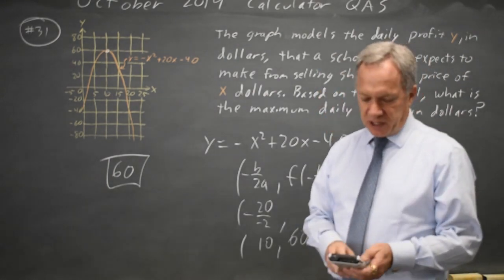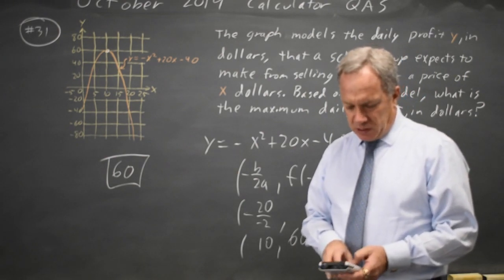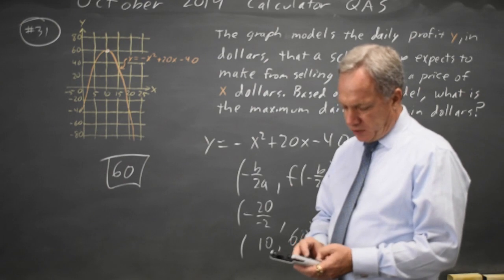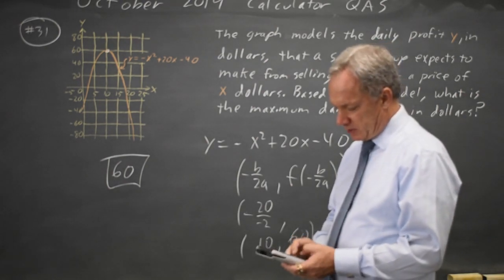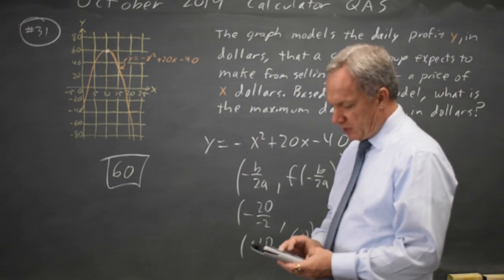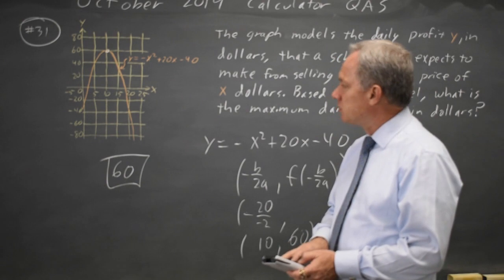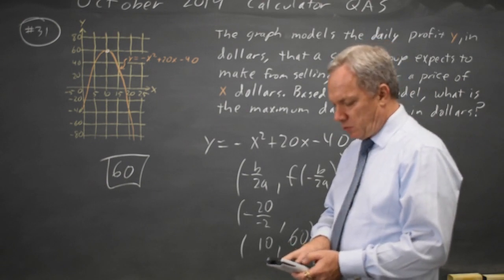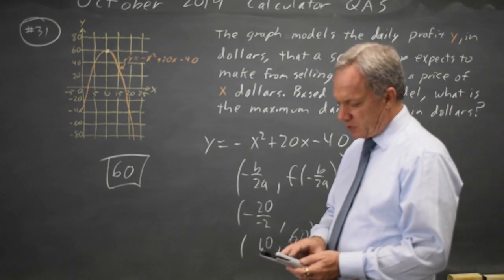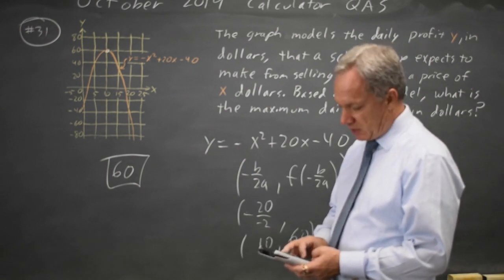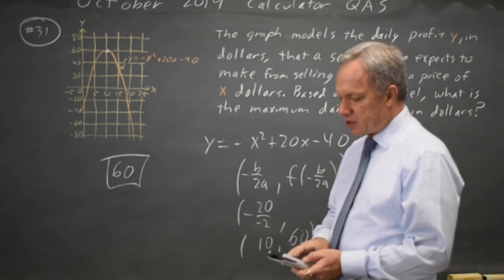Third option is on our graphing calculator. Put negative x squared plus 20x minus 40 into y equals. And I can go to window, let's make x max 25 because that's the window they're showing, and y max 80. And my graph looks very much like their picture.